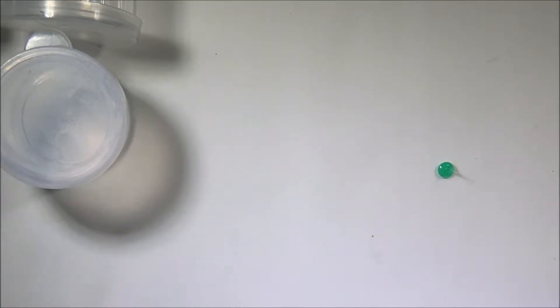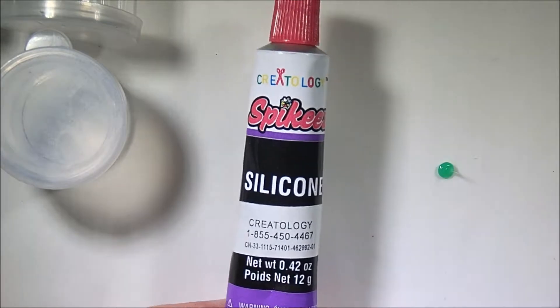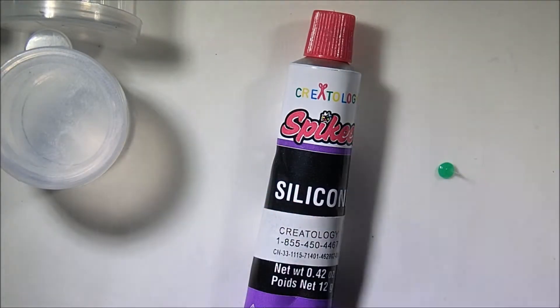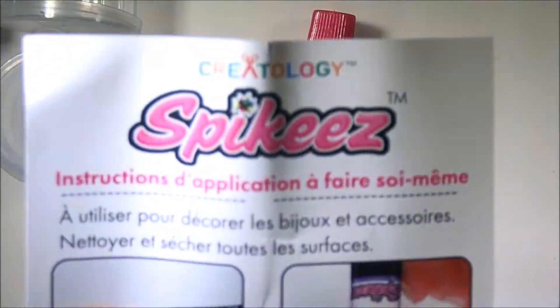So here we are. If you open up the box, you get a tube of silicone. I have green and pink here. There are other colors, but I didn't have that many color options. You get a little silicone tip, or piping tip, and instructions.